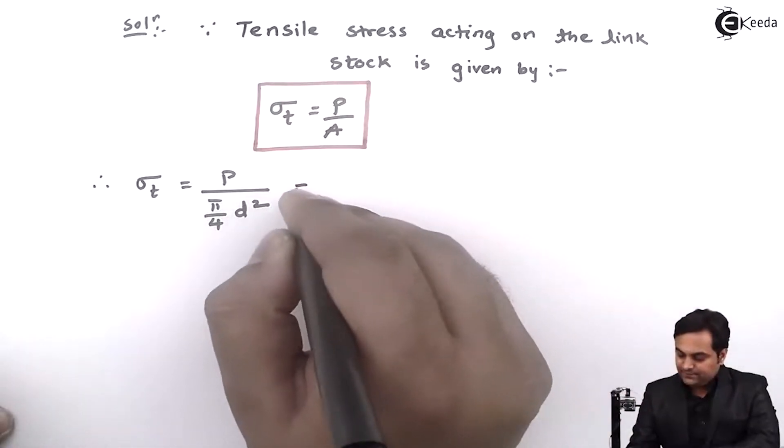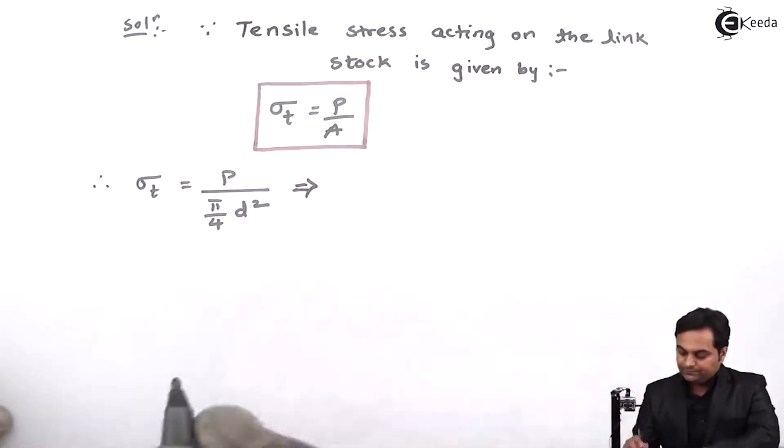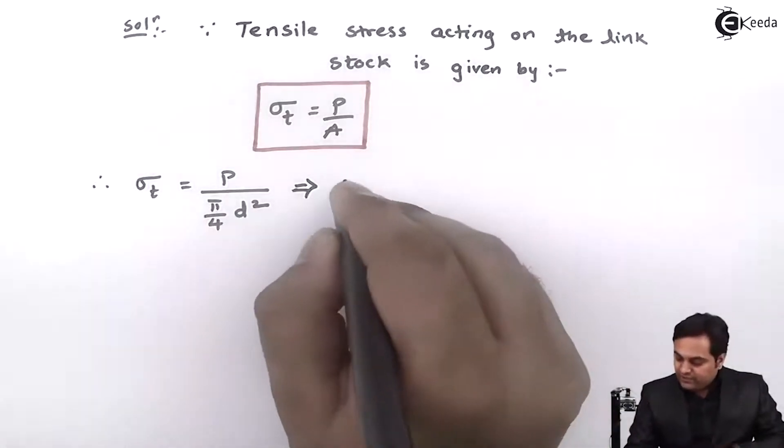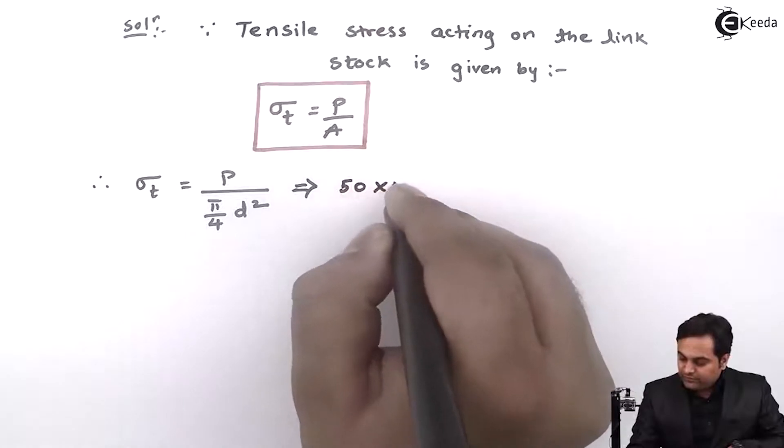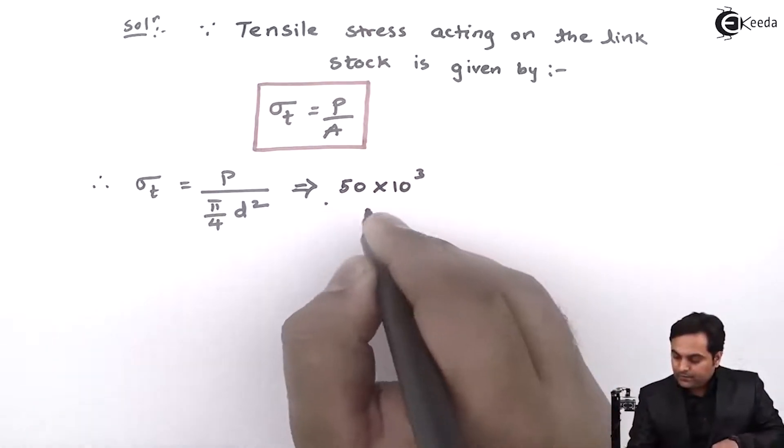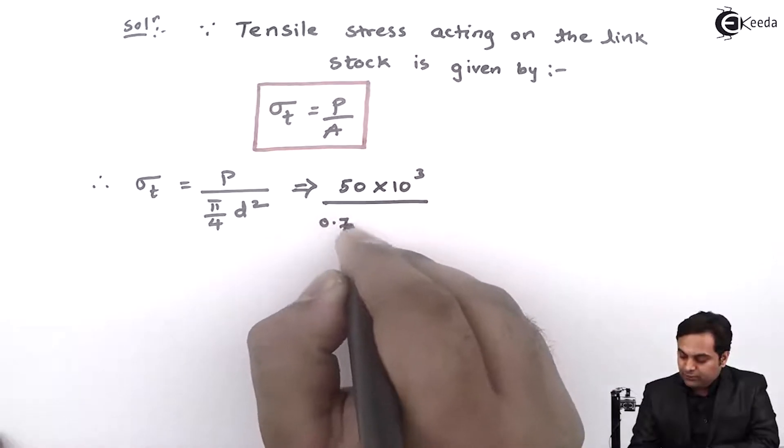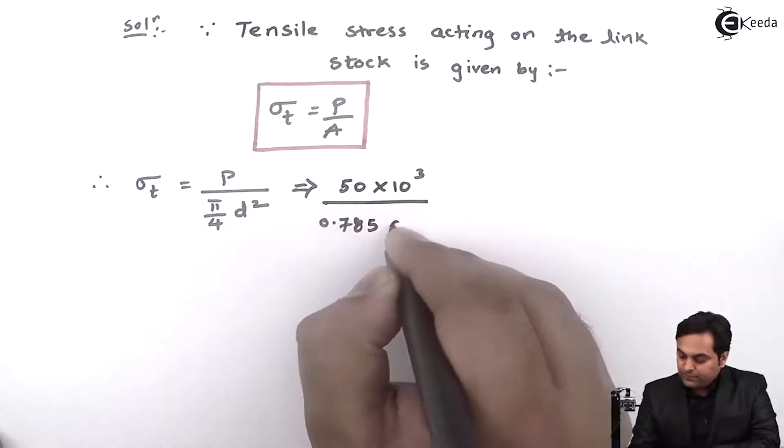Next, here P is given in the problem as 50 kilonewton, so it is 50 into 10 raised to 3 newtons upon pi by 4, that is 0.785 d square.